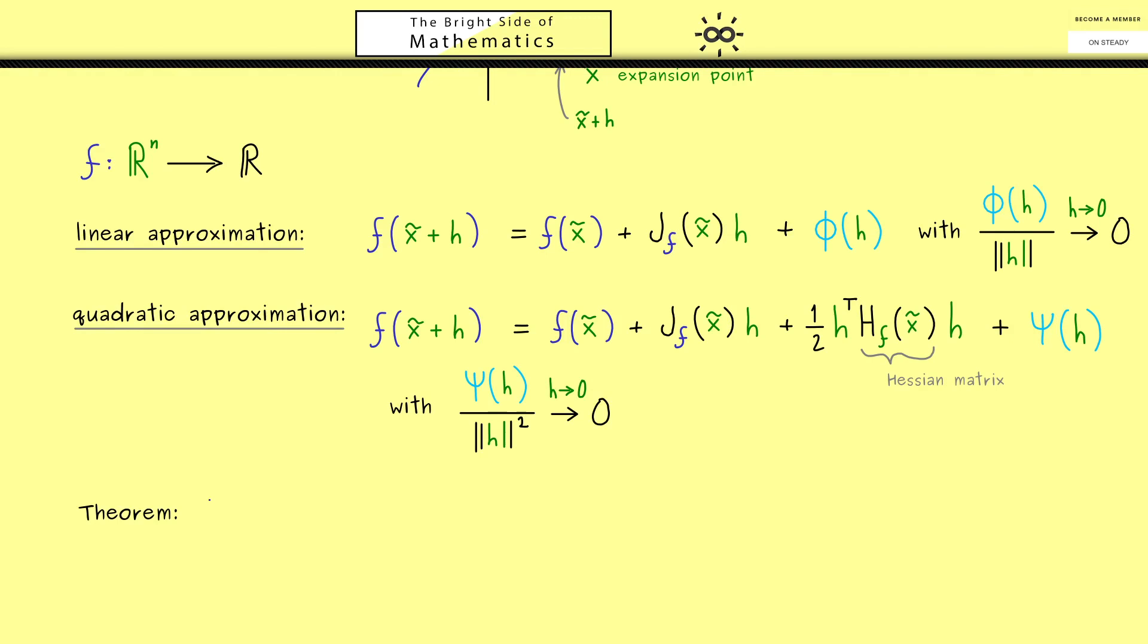So this will be the generalized version of Taylor's theorem, where we can use our multi-index notation from the last video. However, first let's fix the assumptions we need here. So as before, we have a function f with n variables. Now, the chosen domain here could be a general open set. However, our formulation is a little bit simpler if we choose the whole R^n for it. Ok, but now what we need is that a lot of partial derivatives exist.